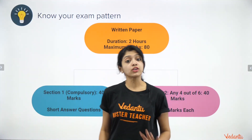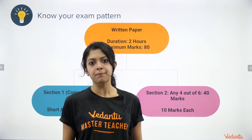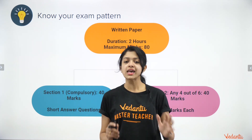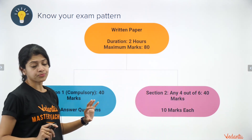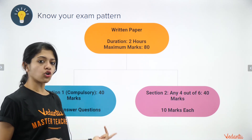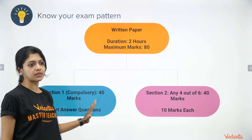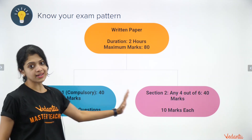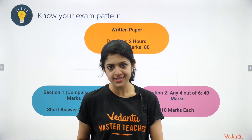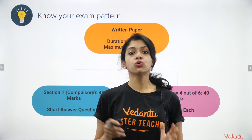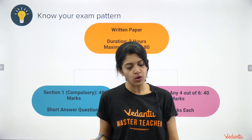The first step is to know your exam pattern. By now, 99.99% of you should be familiar with it, since you've already written all your pre-board examinations in the actual board exam pattern. Most of your main exams will be for a duration of two hours, for a maximum of 80 marks — especially for science and many other subjects. The paper will be divided into Section 1 and Section 2.